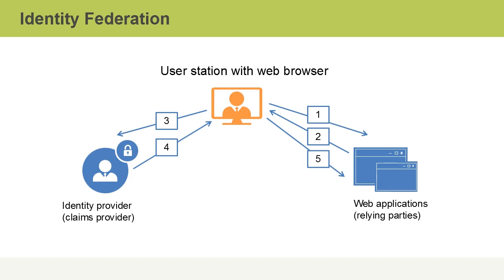Transmission number five would be the user station web browser sending that token, which could be a cookie, to the application, which then authorizes the user to use the application. On a large scale with many web applications, this model makes a lot of sense and makes things much easier over the long term.